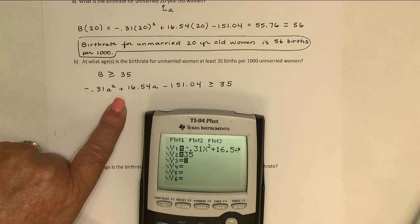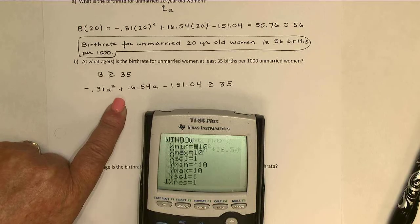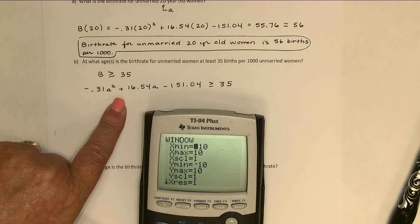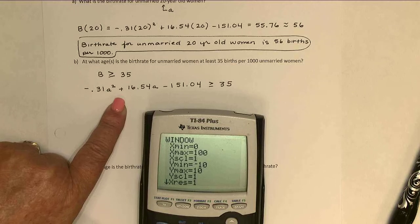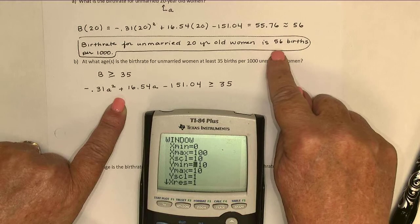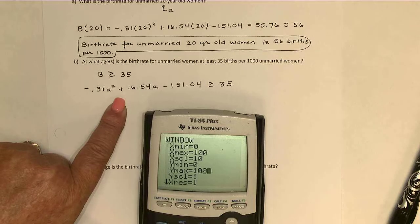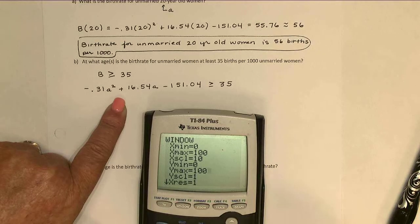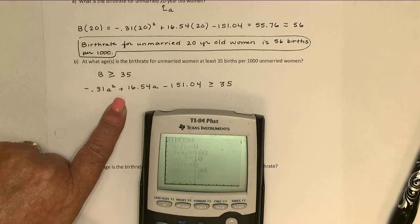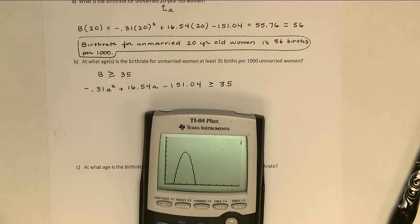And let's see, as far as the window is concerned, we're talking about the ages of women. So it can't be less than zero. And I'm going to say we're not going to go more than 100, scale of 10. And why is the birth rate? We already knew up here it was 56, so we're looking at relatively larger values. Let's try zero to 100 for that as well, and we'll see what happens. Scale of 10 again. And it looks like we're okay. We've got it. And there's the 35.